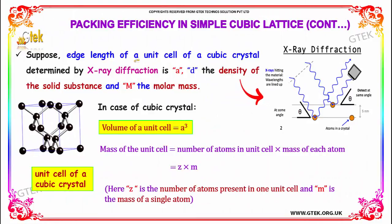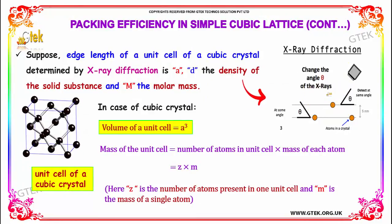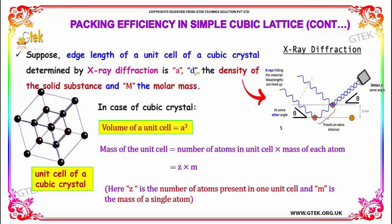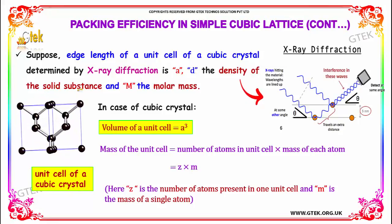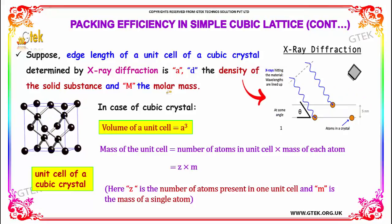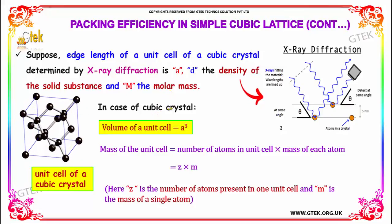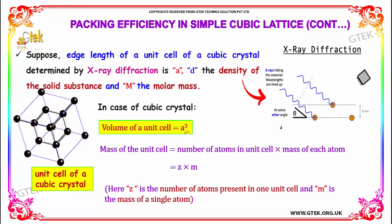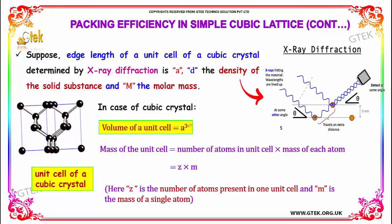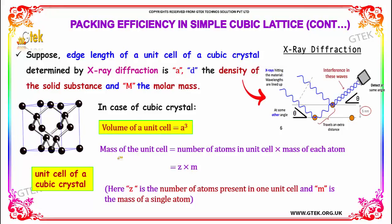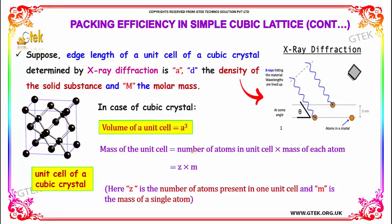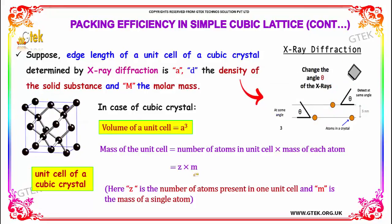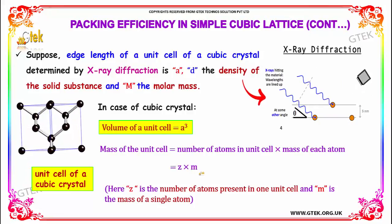Suppose the edge length of the unit cell of a cubic crystal determined by X-ray diffraction is A, D is the density of the solid substance, and M is the molar mass. For the cubic crystal, the volume of the unit cell is equal to A³. The mass of the unit cell is equal to the number of atoms in the unit cell, Z, multiplied by the mass of each atom, giving Z into M.